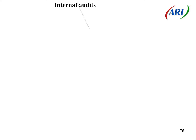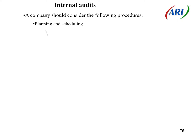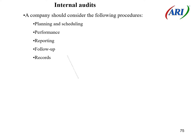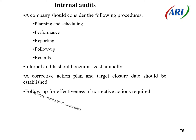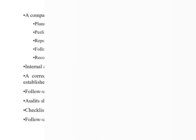Internal audits: a company should consider the following procedures — planning and scheduling, performance, reporting, follow-up, records. Internal audits should occur at least annually. A corrective action plan and target closure date should be established. Follow-up for effectiveness of corrective actions is required. Audits should be documented; checklists are encouraged. Follow-up should be documented.